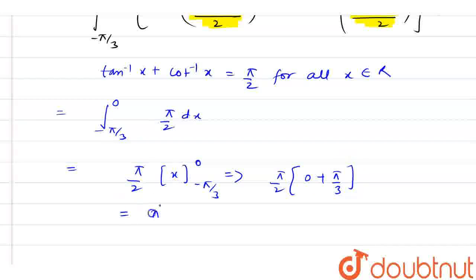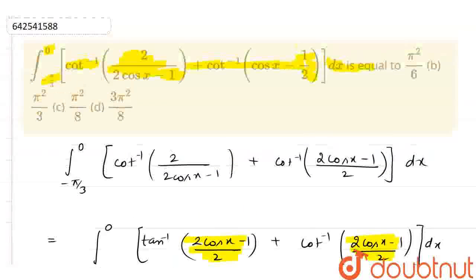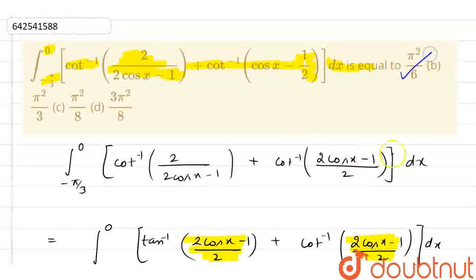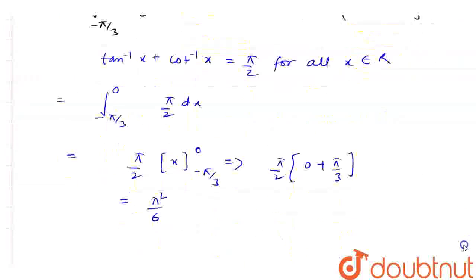So, my answer here is pi square by 6. Now, if you look at the option then option A is the correct option here and this is my final answer. Thank you.